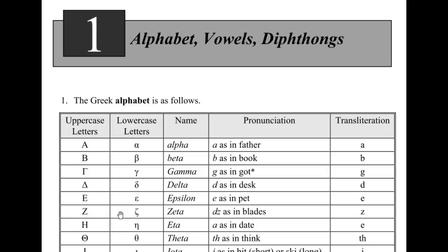Zeta — the DZ as in blades. Eta — A as in date. Theta — TH as in think.